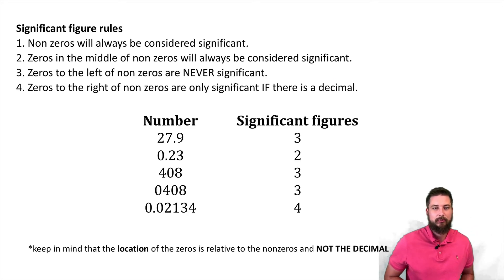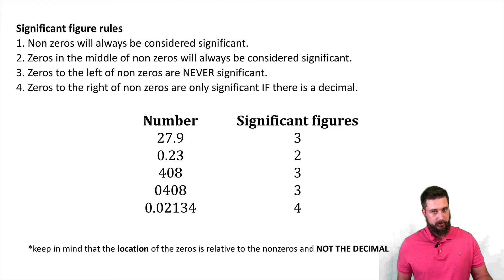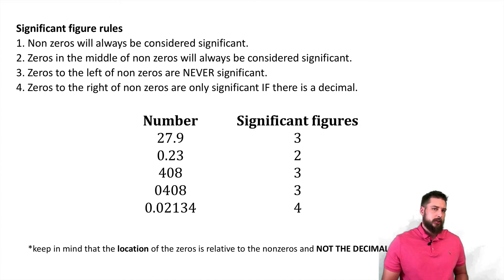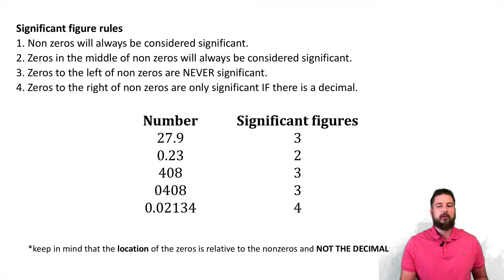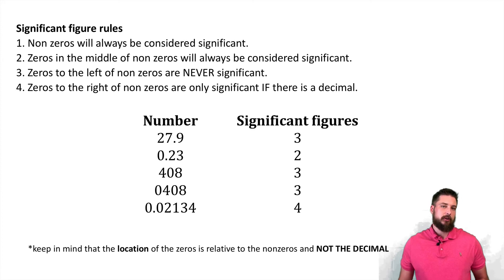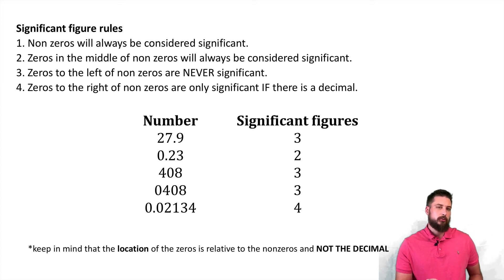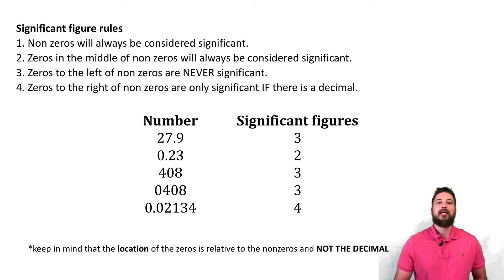Let's look at some examples. The number 27.9 — all non-zeros, all significant, three significant figures. The number 0.23 — the two and three are significant, but the zero in front is to the left of the non-zeros and is never significant, giving two significant figures. The number 408 — the four and eight are significant, and the zero in the middle of non-zeros is also significant, giving three significant figures.